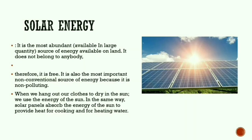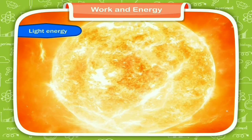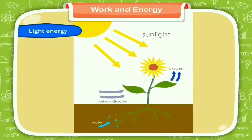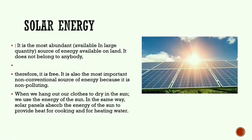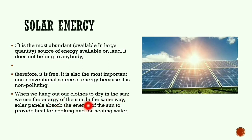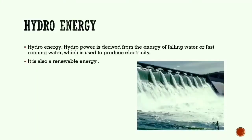Solar energy is the most abundant source of energy available on land. Abundant means available in large quantities, and from the sun we get light energy. Plants also produce their food using sunlight's energy. Solar energy is free and the most important non-conventional source of energy because it is non-polluting — a green, renewable energy. Solar panels absorb the sun's energy to provide heat for cooking and heating water.